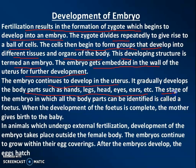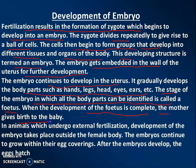The stage of the embryo in which all the body parts can be identified is called the foetus. When the development of the foetus is complete, the mother gives birth to the baby.